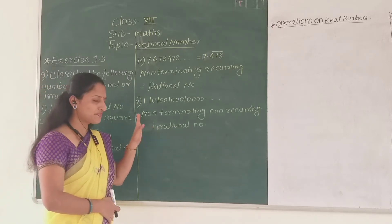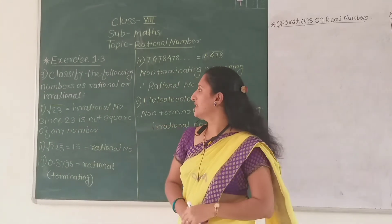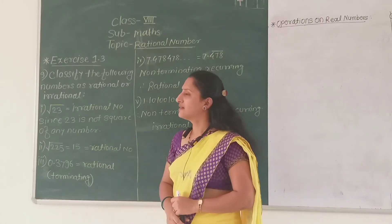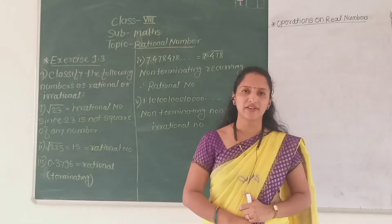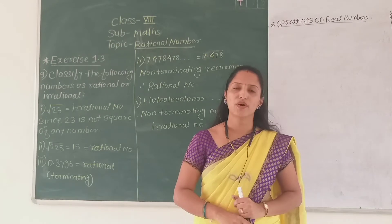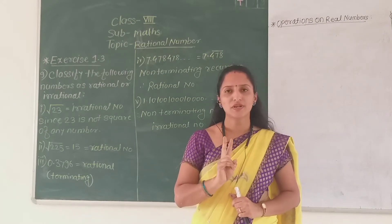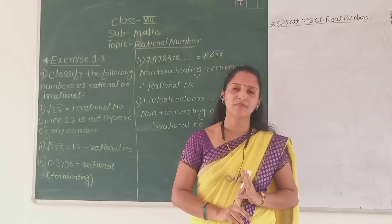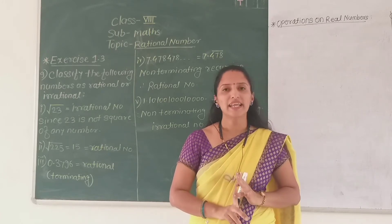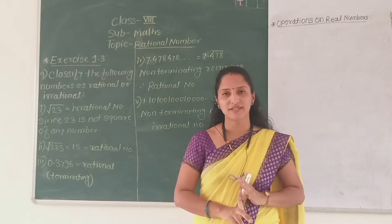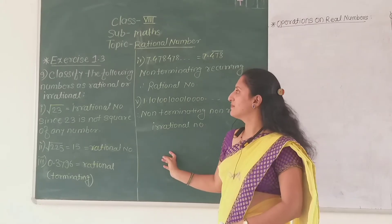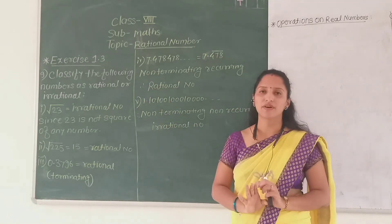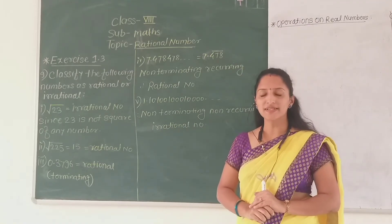It is very simple to identify rational and irrational numbers. You just have to remember those two key statements — the decimal expansion of a rational number and the decimal expansion of an irrational number. With this example, we have completed exercise number 1.3.